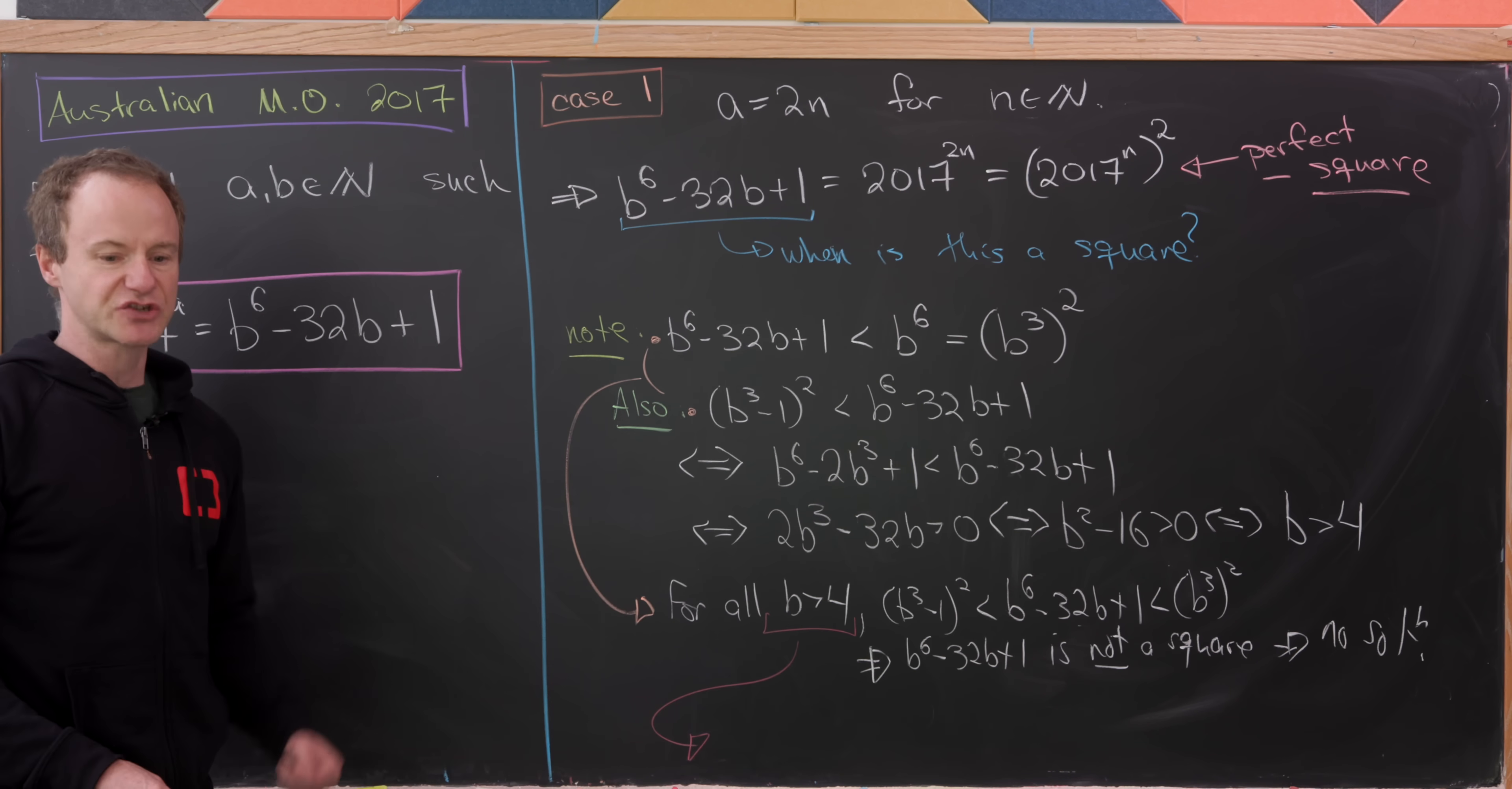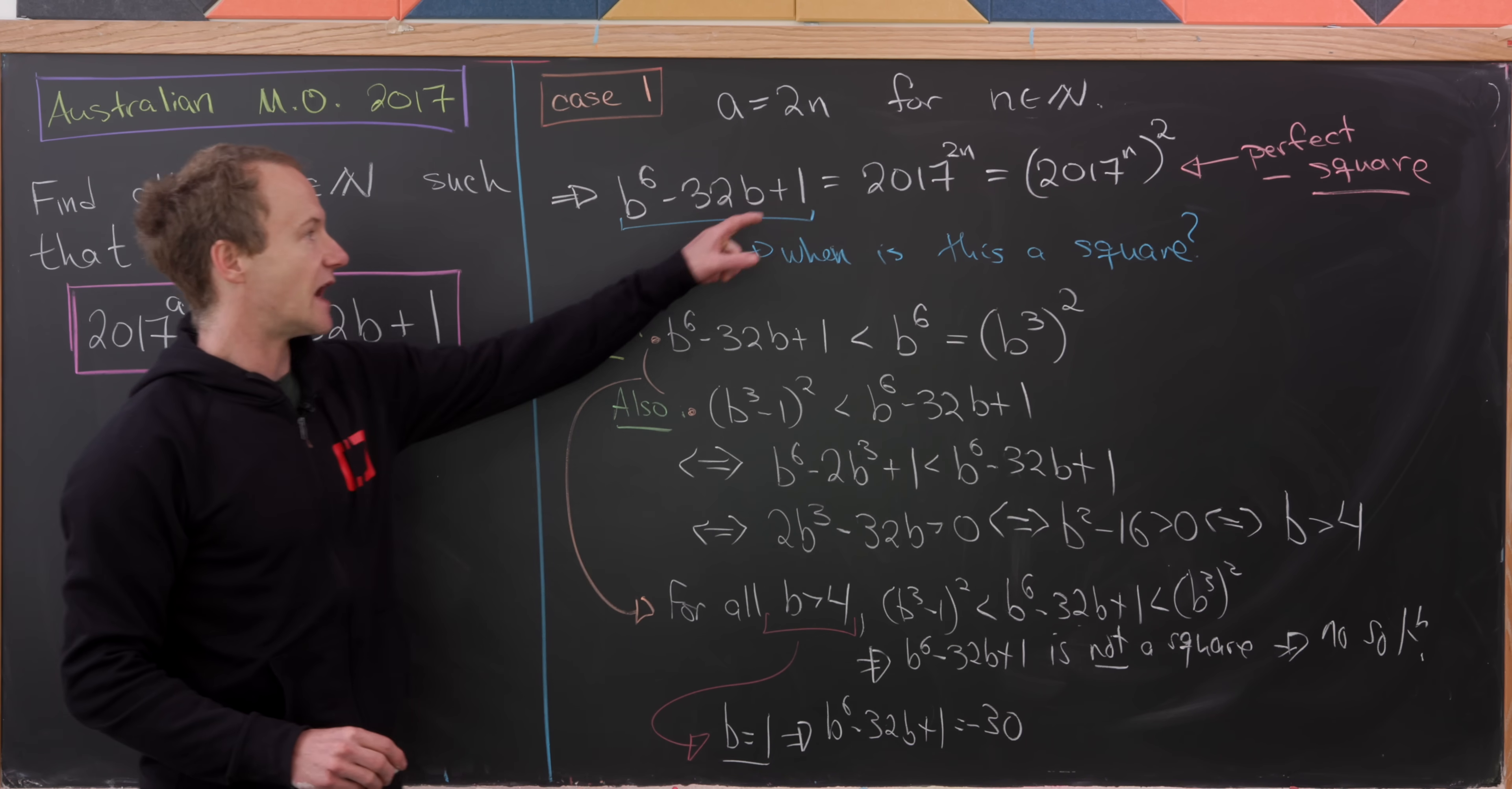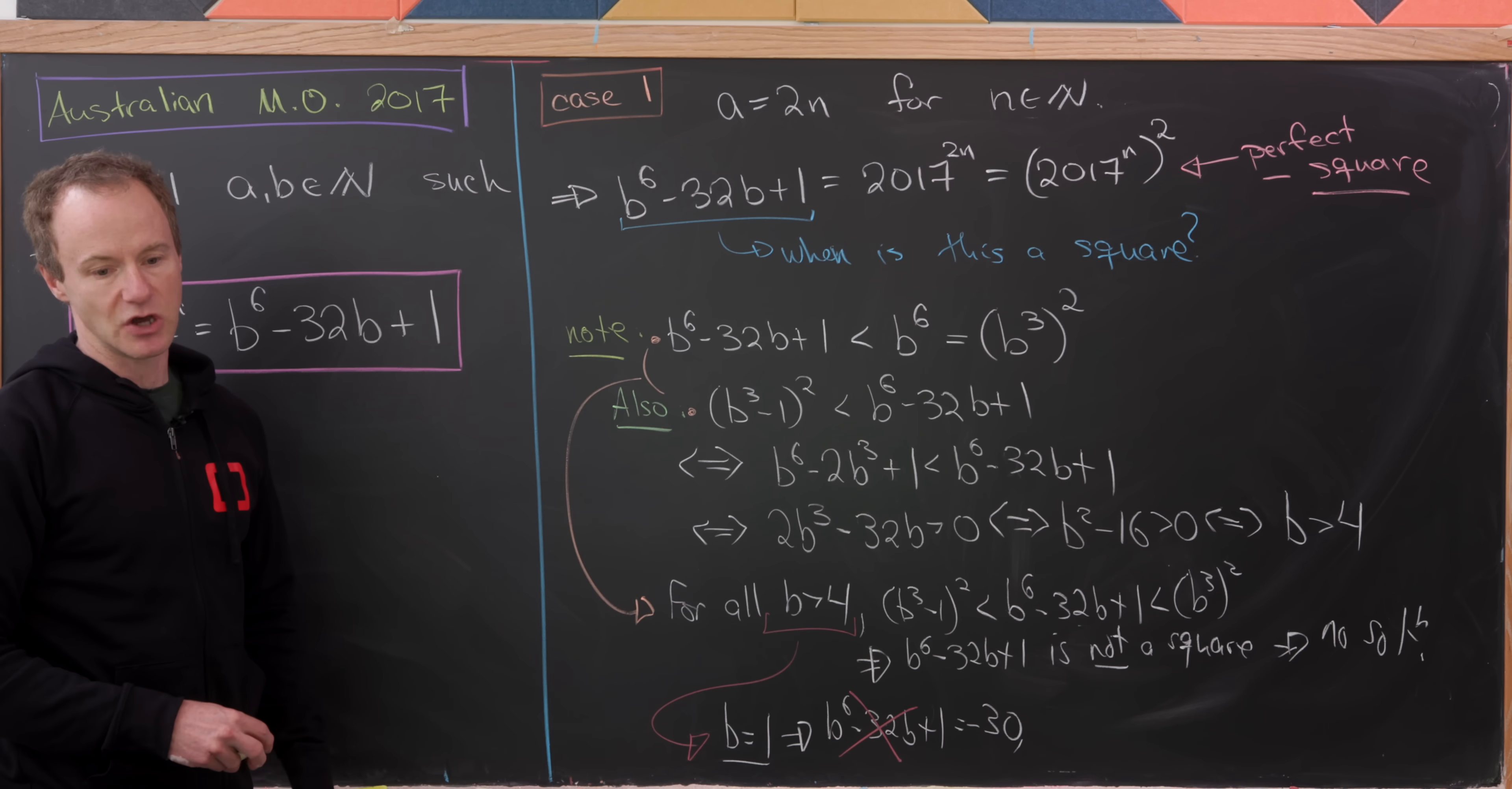We can actually just work those out one case at a time. So let's notice that if B is equal to 1, then that means that B^6 minus 32B plus 1 is equal to negative 30. But notice that negative 30 is not a power of 2017. Well, it's also not a perfect square. But we can maybe go back to our original need of it being a power of 2017 if we wanted to. Either way you look at it, we get no solution here. So I'll just put an X here to show that there is no solution.